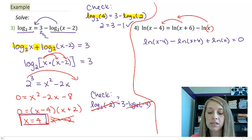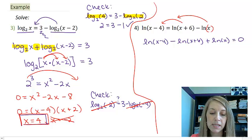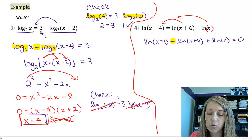Well, if I use my product and my quotient rule property, I know since these are all natural logs of base e, I can change my subtraction into a quotient and I can change my addition into a multiplication.